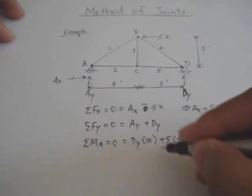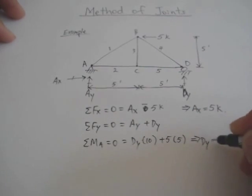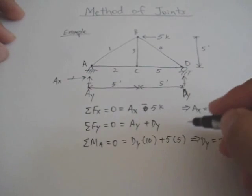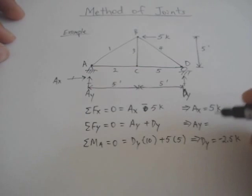Now solve the equation. You will get Dy to be minus 2.5 kips. Now go back to the sum of the forces in the y equation. You can solve for Ay now. Which turns out to be plus 2.5 kips.